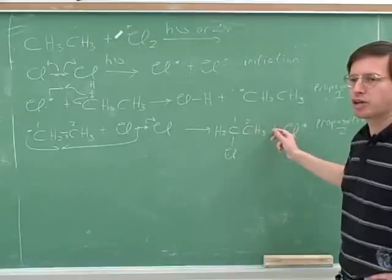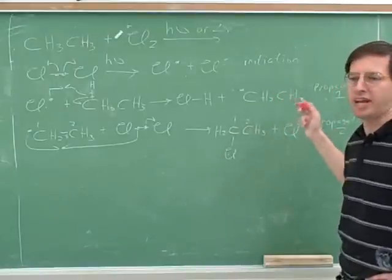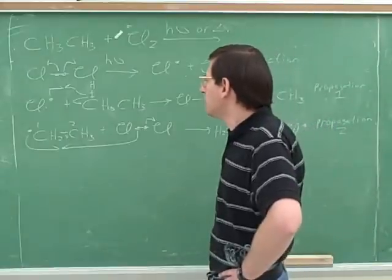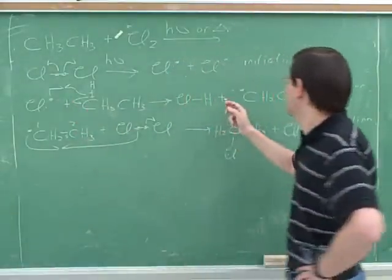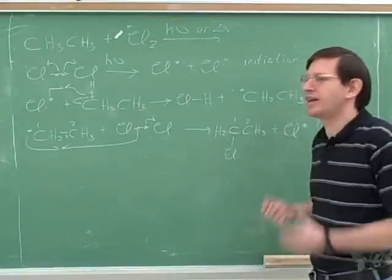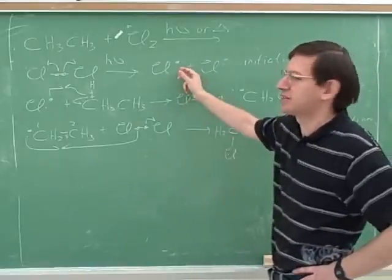Now, this chain reaction can't keep on going forever. When would this terminate? What would a termination look like? Well, it terminates when, notice that if a radical meets a non-radical, you just get another radical and non-radical out of that. It would terminate if two radicals met up with each other. That would just be the opposite of initiation.